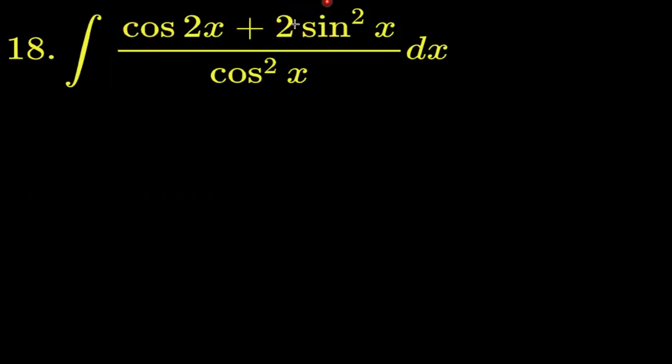Cos 2x plus 2 sine square x divided by cos square x dx. Here it makes sense to apply the formula for cos 2x which is 2 cos square x minus 1, because then in the numerator you will have 2 sine square x plus 2 cos square x.